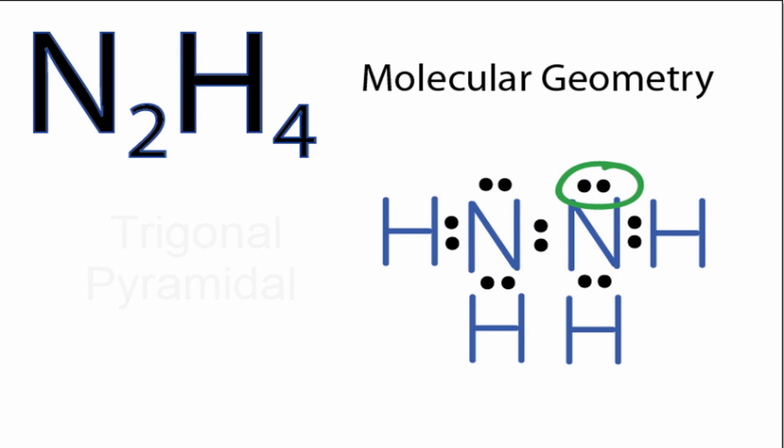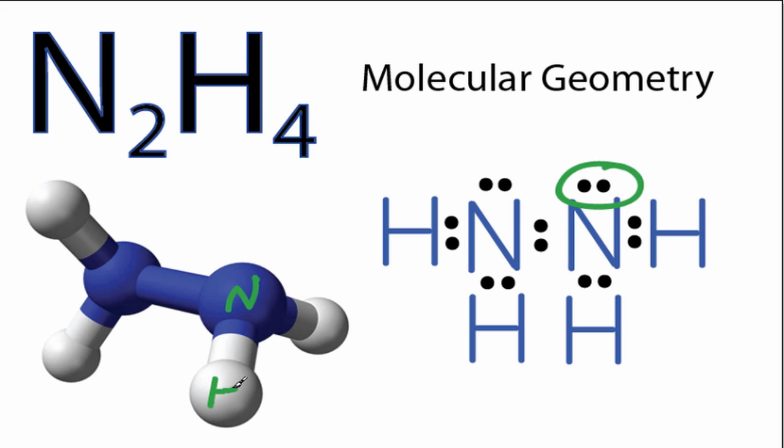That's going to look like this. Here we have the nitrogens in blue and the hydrogens in white. Don't forget the lone pair of electrons that's on each nitrogen. You can see that each of the nitrogens kind of looks like a pyramid, and we call that a pyramidal molecular geometry.